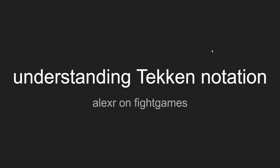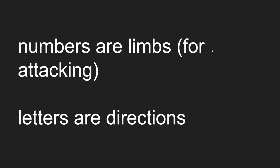So what's the deal with Tekken notation? Numbers are limbs — that's it. Numbers are limbs for attacking, and the letters are directions. We write different combinations of numbers and letters to talk about combinations of attack buttons and directions that you're going to input.